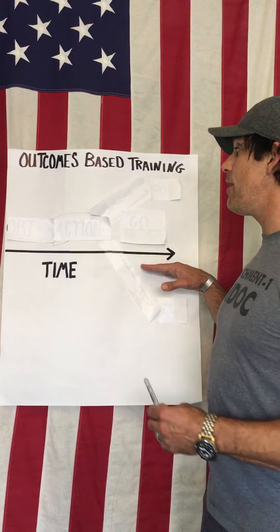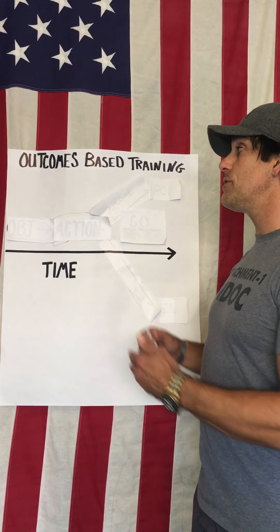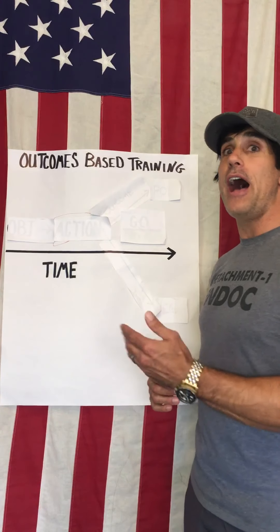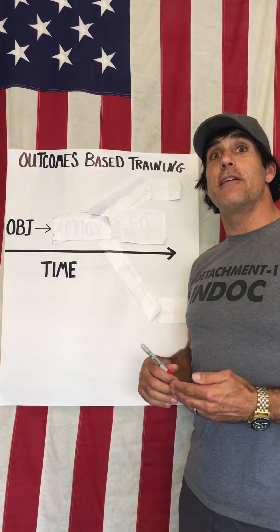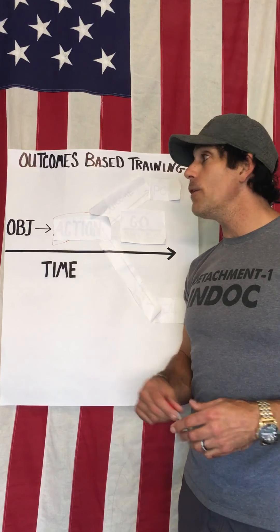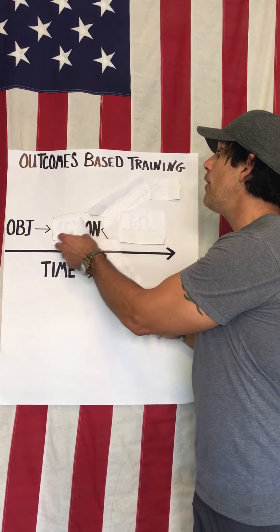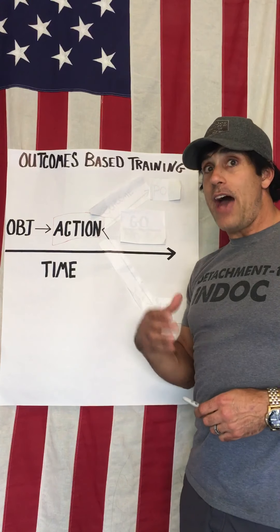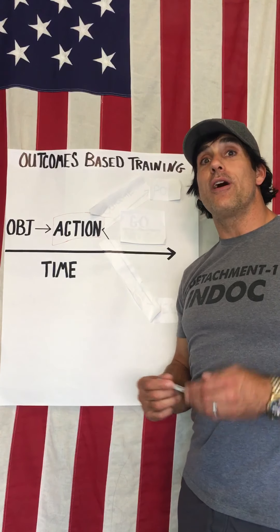So here you go — you can see we have an arrow here, which is just a continuum of time. It's one o'clock here, it's four o'clock here. Somewhere along this line, the first thing you do in training is identify your objective — what is it you want to accomplish during that training or mission? Once you establish that objective, you've got to figure out how you're going to achieve it — what are the steps you're going to take? We call those the actions. Once you've identified the objective and taken those actions, at some point you've got to evaluate your progress.